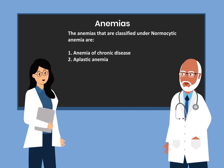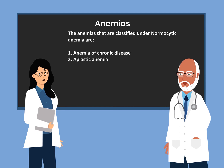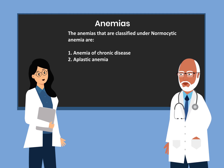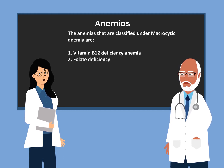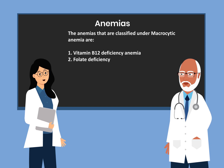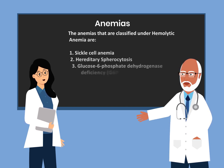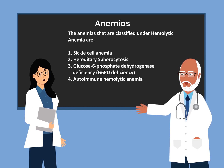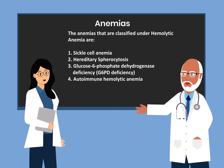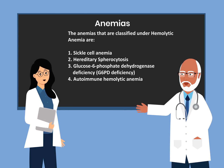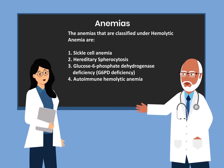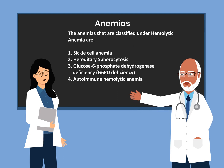The anemias classified under normocytic anemia are: number one, anemia of chronic disease; and number two, aplastic anemia. The anemias classified under macrocytic anemia are: number one, vitamin B12 deficiency anemia; and number two, folate deficiency. And finally, the anemias classified under hemolytic anemia are: number one, sickle cell anemia; number two, hereditary spherocytosis; number three, G6PD deficiency (glucose-6-phosphate dehydrogenase deficiency); and number four, autoimmune hemolytic anemia.